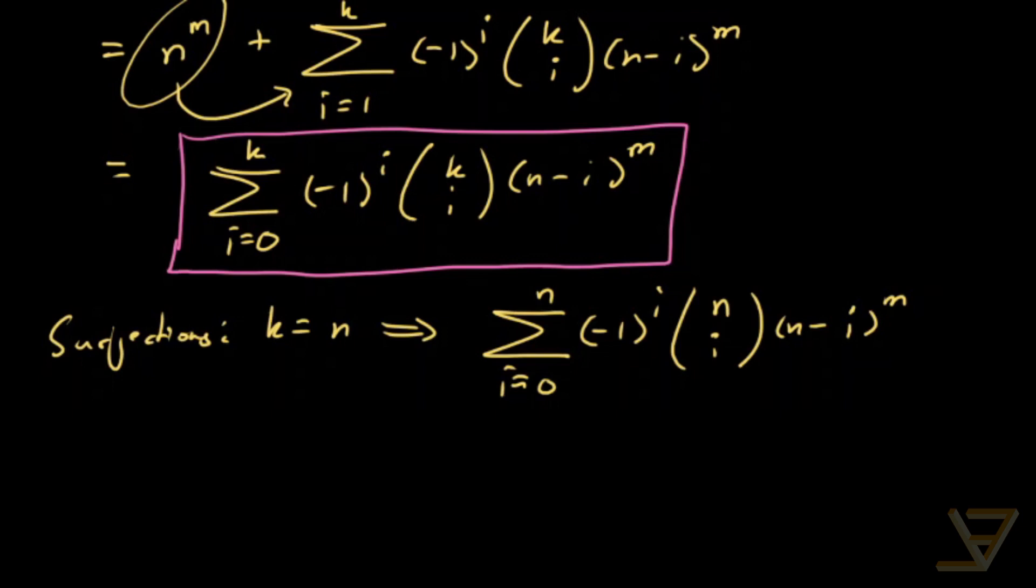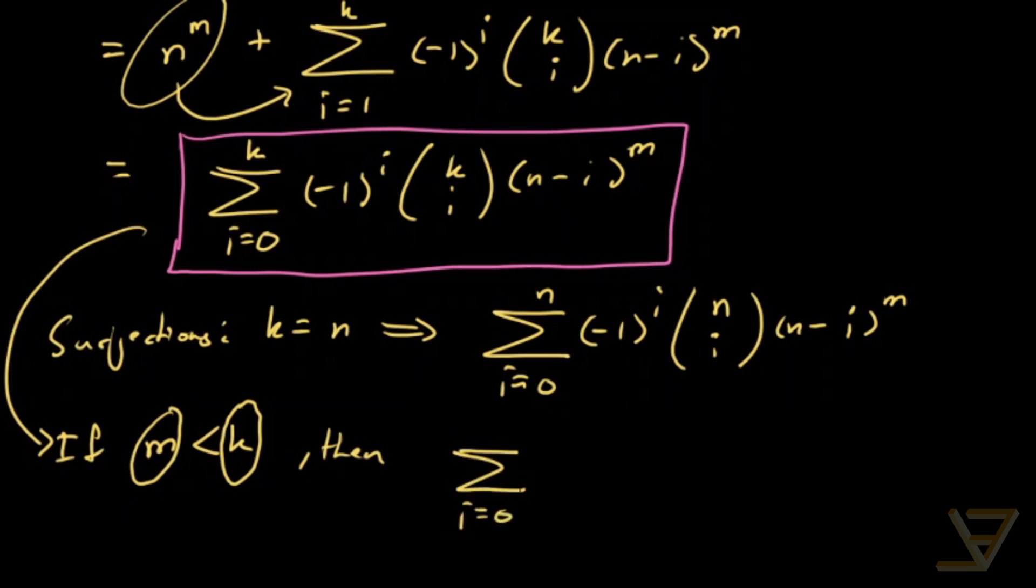And I just want to leave you with one more idea, which is that if over here m is less than k, then we cannot map from m elements in the domain to k elements in the co-domain. It's impossible. So what that means is that in that case, the sum that we have above, which is i equals to 0 through k, negative 1 to the power of i, k choose i, n minus i to the power of m is simply equal to 0.